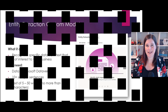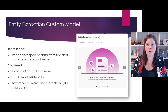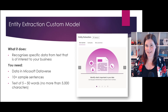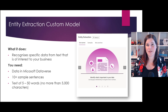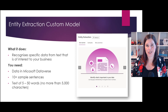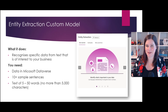The last custom model is the entity extraction model. This is all about extracting known pieces of information — which is how the word 'entity' is being used here — from unstructured text. Things like colors or your own terminology that you want to be able to pick out from the text. So not just general keywords, but the particular things that you're looking for.